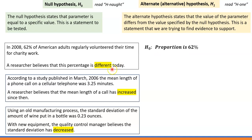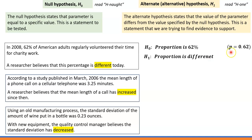What is H1, the alternative hypothesis? That's the claim that the proportion has changed. The key word is that it's different today. So H1: proportion is different. Using short notation, for population proportion we use lowercase p. H0: p = 0.62. Now what is H1? What mathematical symbol can we use to indicate that p is different from 0.62?